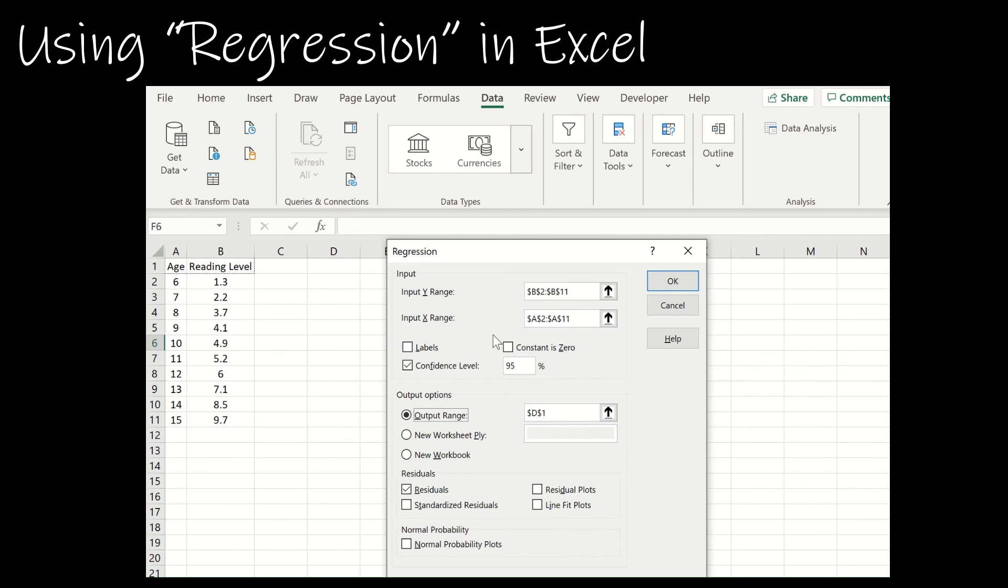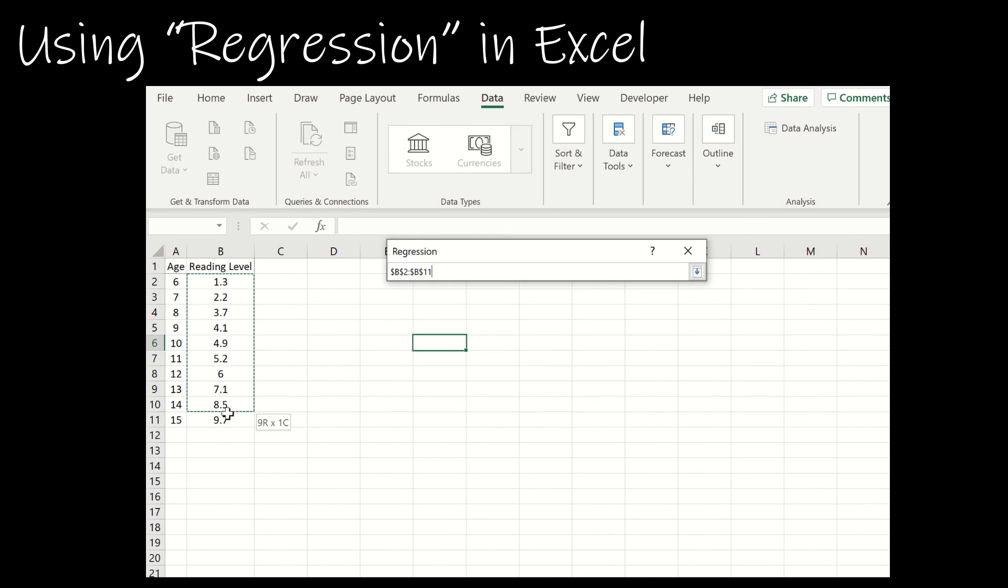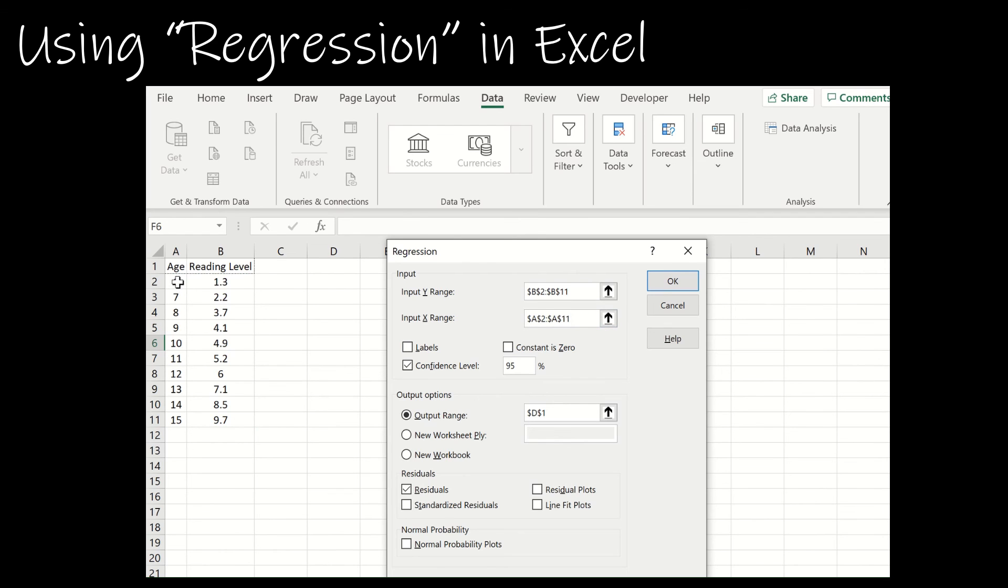When you're doing this, you want to be very careful about how you're entering your data. Notice input y range. If I choose the entire y column, which would be column B, and then the entire x column, which is column A, when I click OK, Excel will say I don't think so, you have too much data. So it's better to just select the B values and then select the A values, the x values which are in column A. That way I don't have to click labels or constant is zero. I can click confidence level, I can click residuals. And then this one just tells Excel where to put the output. I'm going to have Excel put it right here on this page because it's just easier to do so.